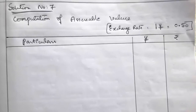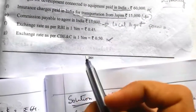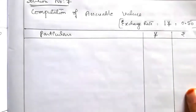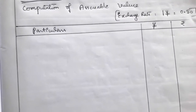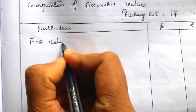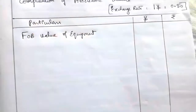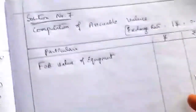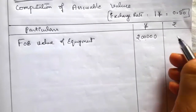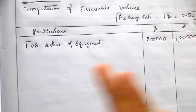Now we work out the solution. Write the heading: Solution number 7 — Computation of Assessable Value. Exchange rate considered: 1 Yen = Rs. 0.50 as per CBEC. Draw a table with particulars column and two amount columns. Since FOB is given directly, the solution starts with the FOB value: 2,00,000 Yen × 0.50 = Rs. 1,00,000.